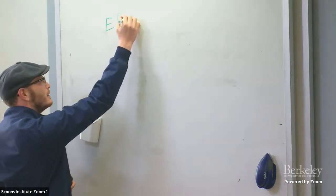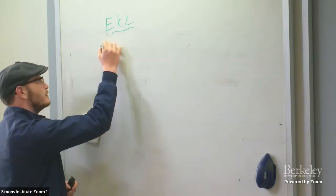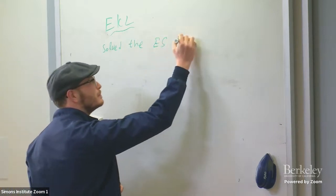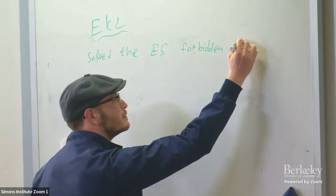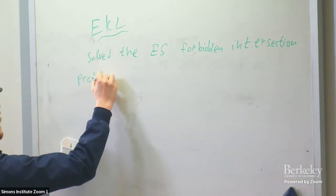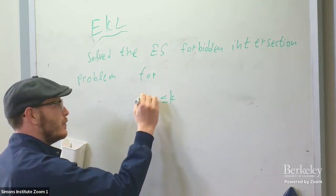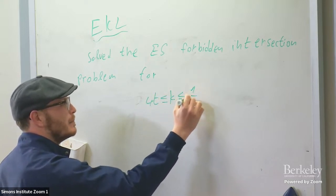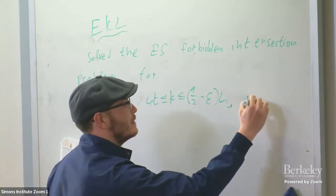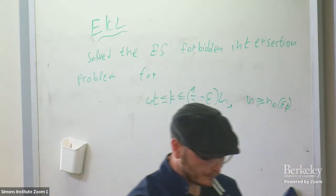What we proved — Alice Keller and me — concerns the forbidden intersection problem. For most values of k, at least 14, and k at most half minus epsilon times n (when k is larger than half this problem doesn't make sense), and n sufficiently large with respect to epsilon and t, we resolved this problem. The main notion we used was juntas.